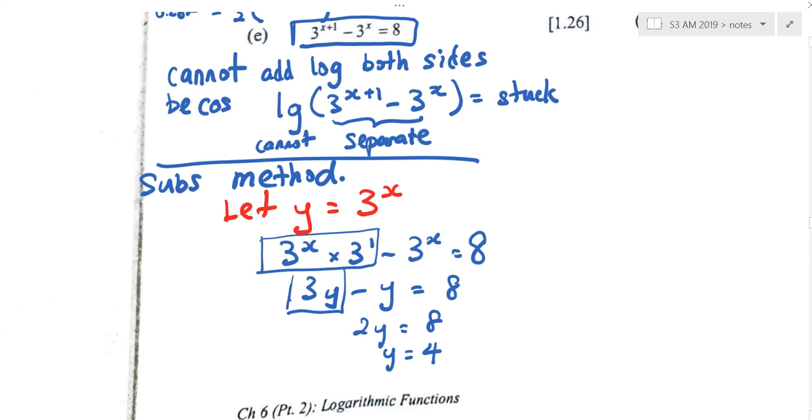Which part is confusing? So first thing I do, I split the 3x plus 1 into 3x times 3. Can you follow? Next, what do I do? Because of the red thing I see, why do I use the red thing? Because here I've got 3 power x, here I've got 3 power x. So I can say 3y minus y is equal to 8. Can you follow? 3 to the power of 1 is 3. You see the boxes I draw? This is equal to this. Y times 3 is 3y. So 3y minus y is 2y. 2y equals to 8. Y equals to 4.